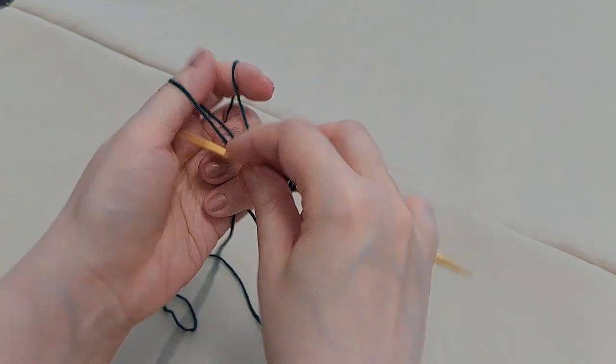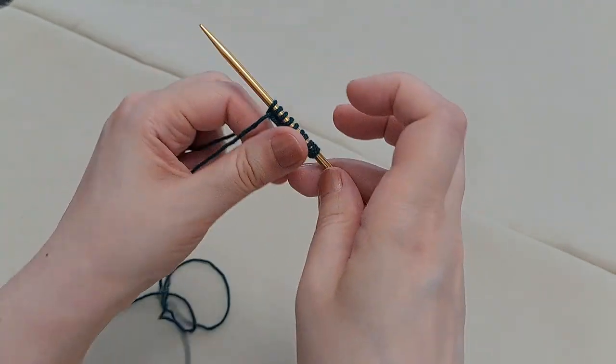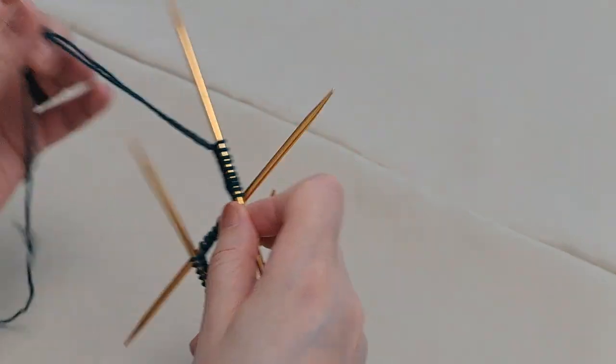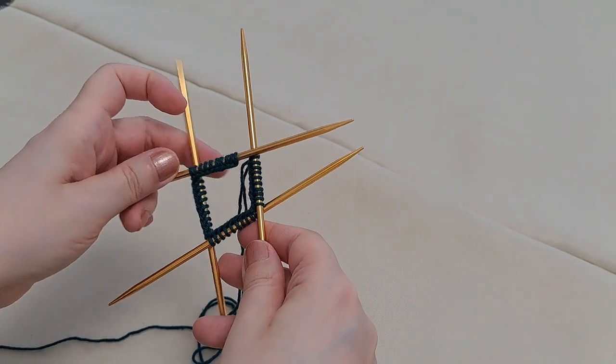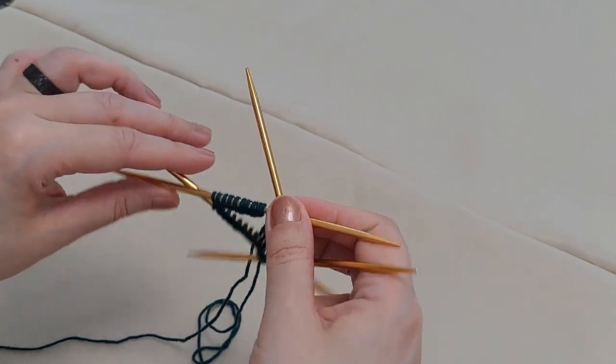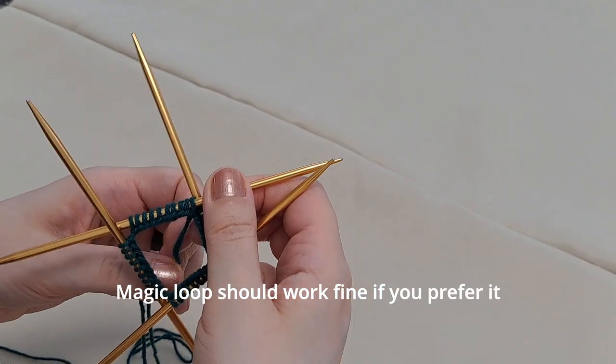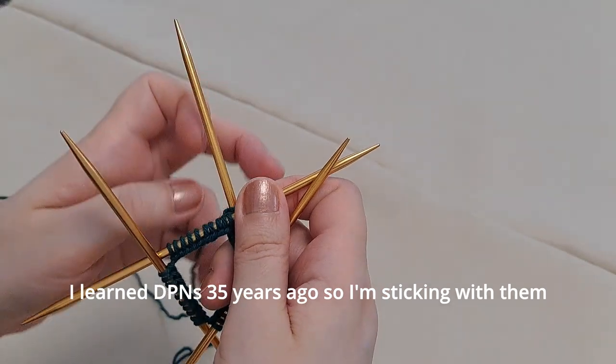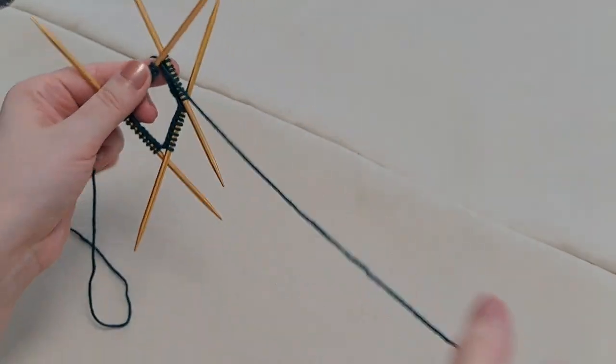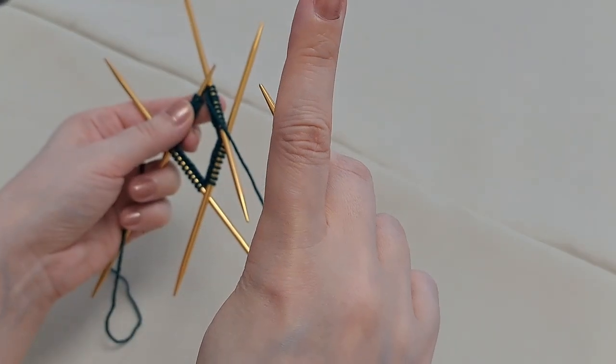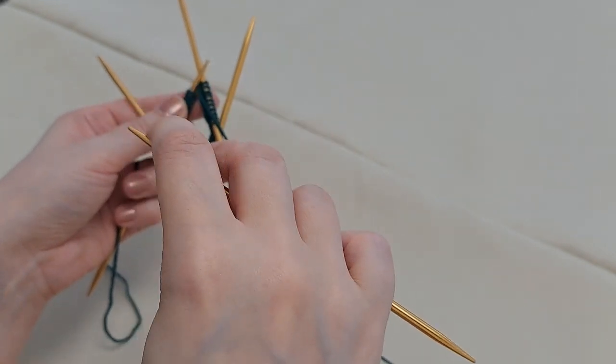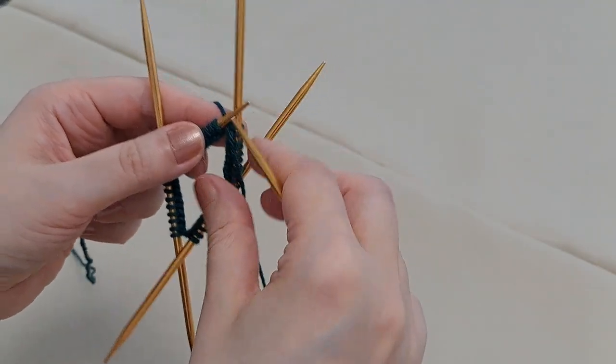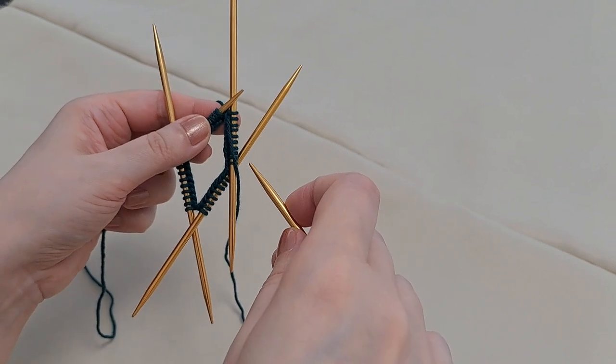I'm going to cast on 40 stitches, 10 per needle. Now I'm going to join to work in the round. I'm making these gloves up as I go along so there is no written pattern for these. Unless Heather of tomorrow will be a super smart girl and write down the stitch count and round count in the description box below.